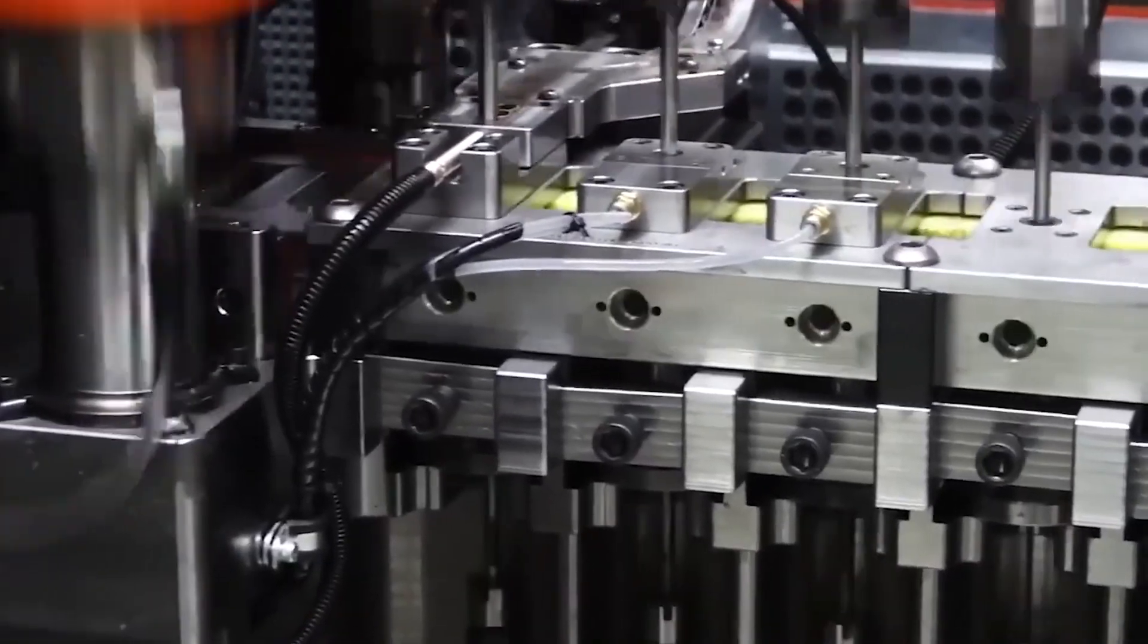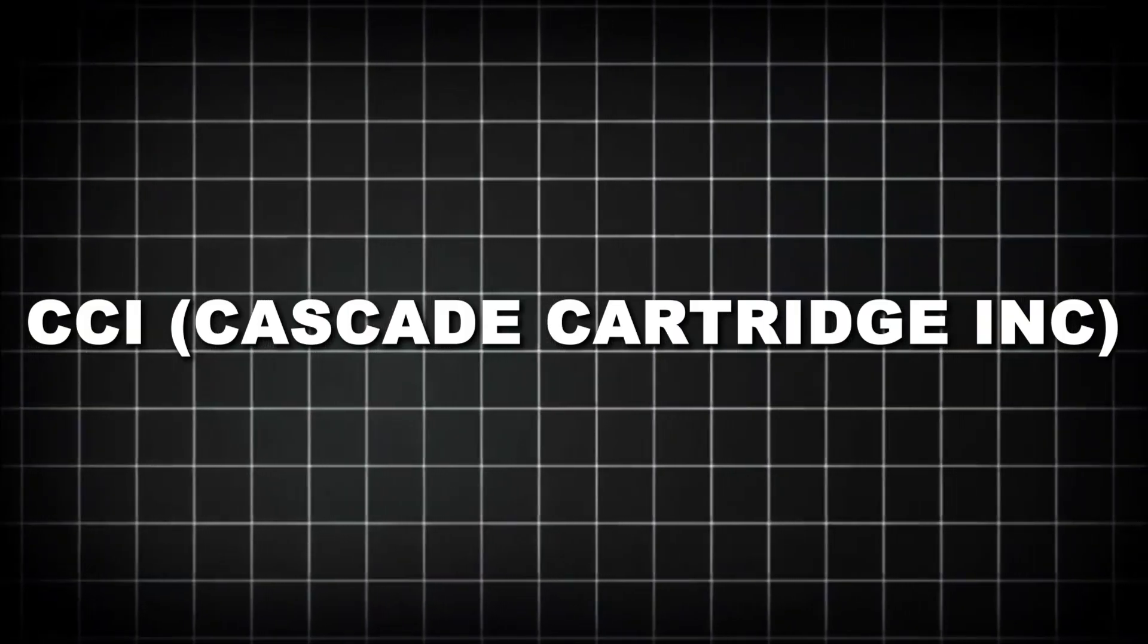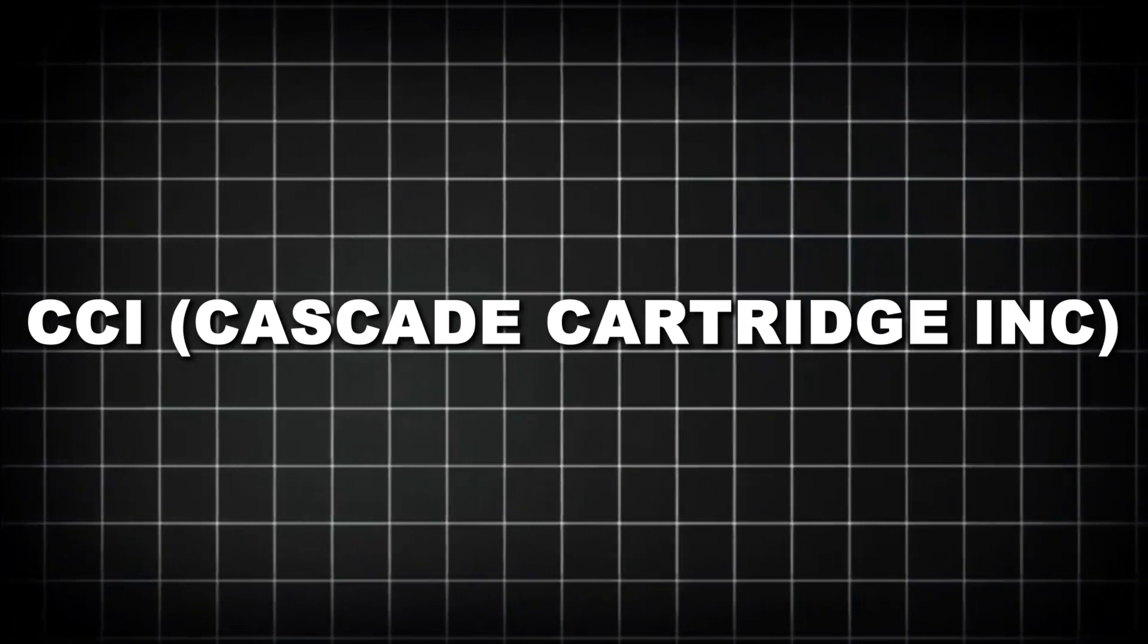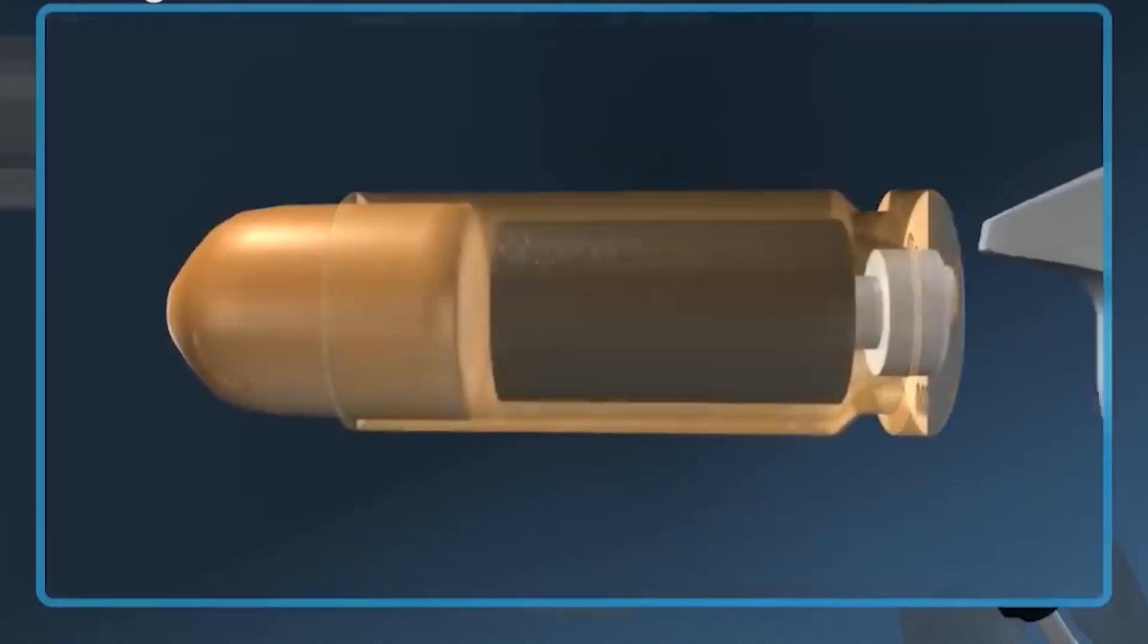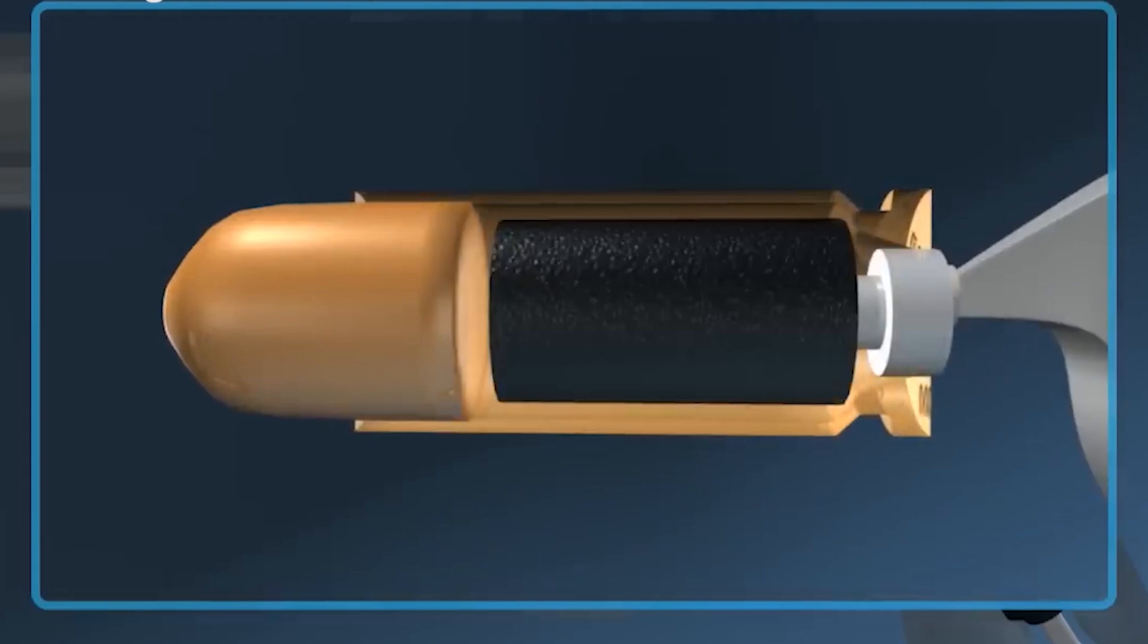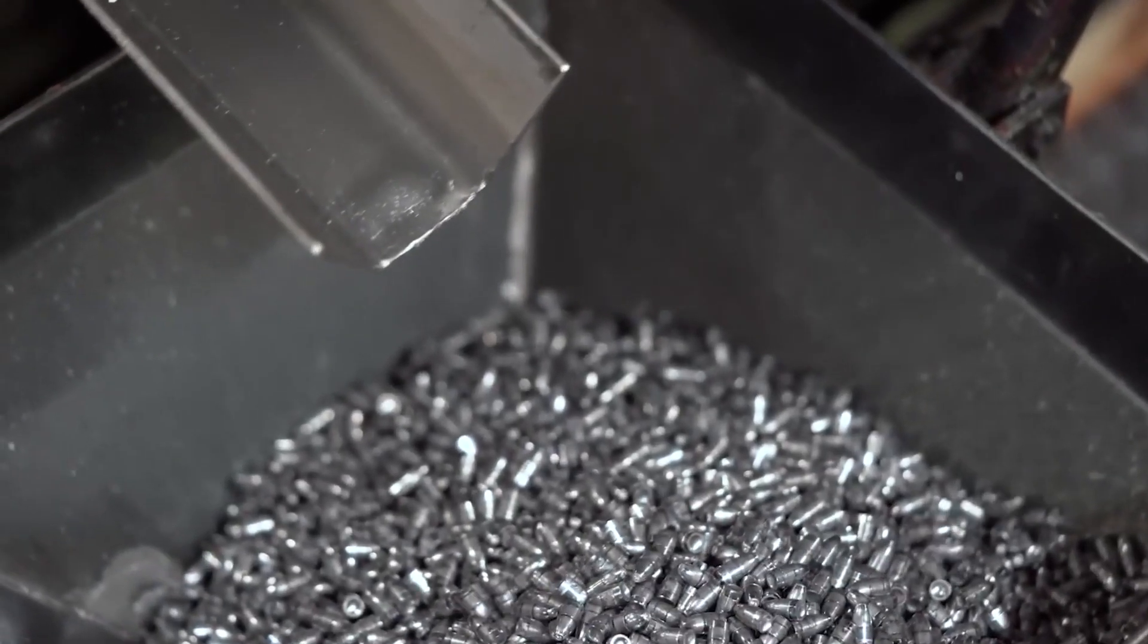At CCI, Cascade Cartridge Inc., in Lewiston, Idaho, their primer production facility operates under such strict safety standards that quantities of priming compound are limited in each room, with operations spread across multiple buildings to minimize risk.